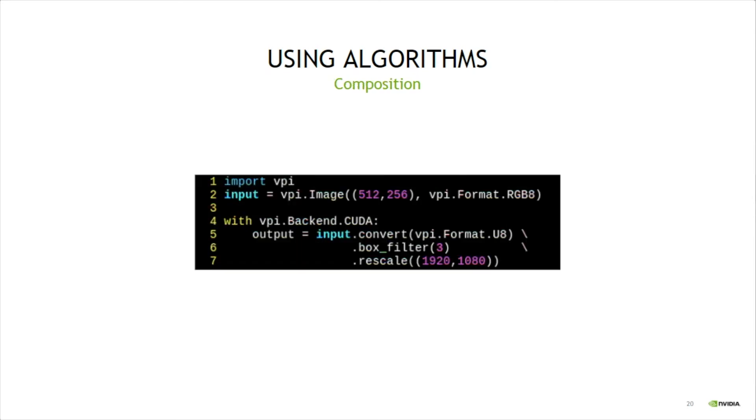The fact that the algorithm's return value is the result of the processing means that we can easily apply a sequence of operations to an image by using method composition. Here on lines 5 to 7, we convert the input from RGBA to U8, then apply a 3x3 box filter, and finally rescale it to 1080p.